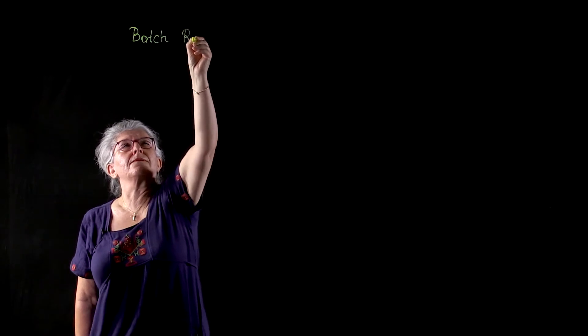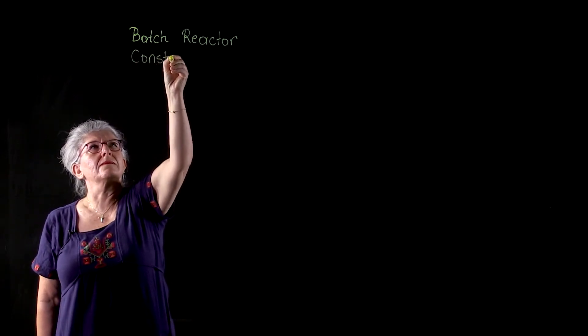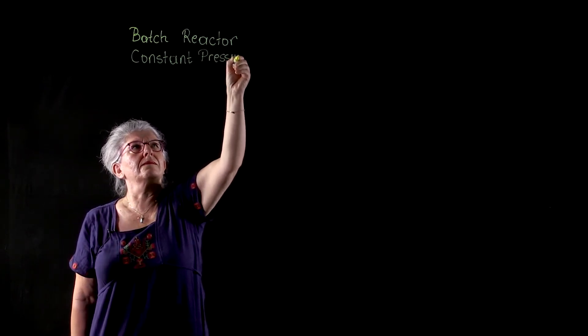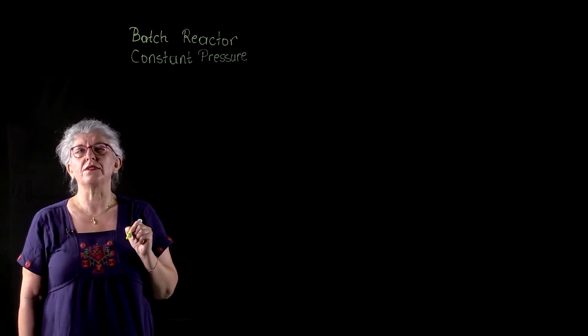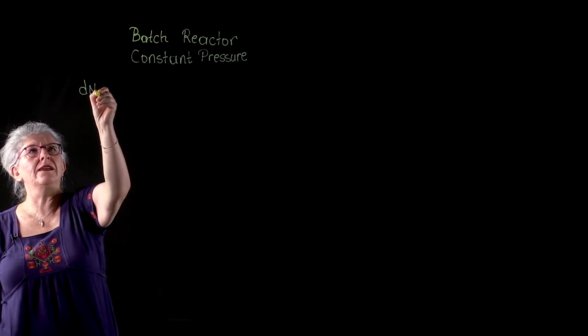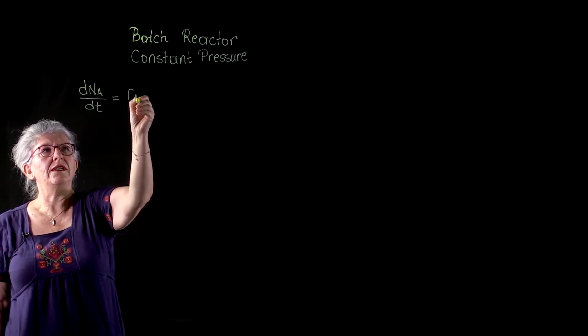Today we are going to learn how to conduct the energy balance around the batch reactor under constant pressure constraints. Again, we will start from the species conservation equation. We have dNA/dt that is equal to RA times V.